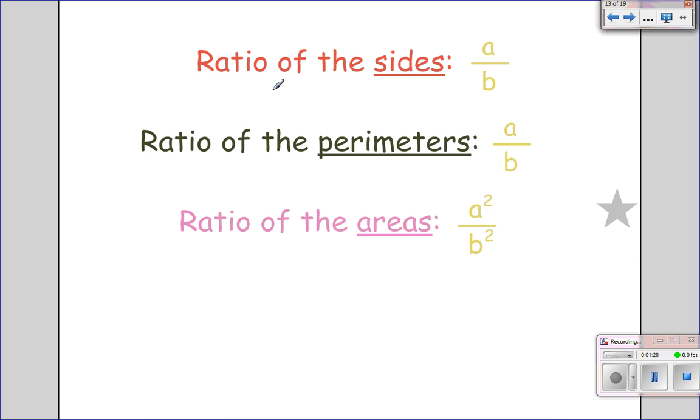So, notice here, the ratio of the sides is just going to be A over B, so one side over the other side. And, the ratio of the perimeters will still be the same as well, A over B. But, to find the ratio of the areas, I do A squared over B squared. I square the ratio, these ratios to get the area ratio.